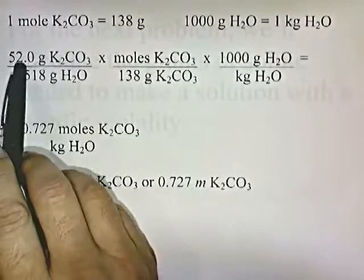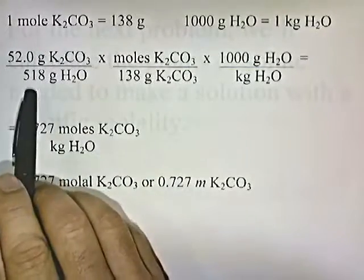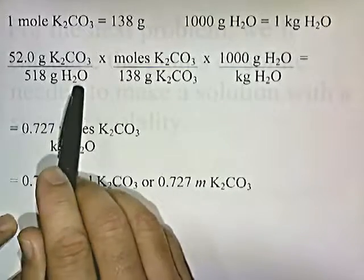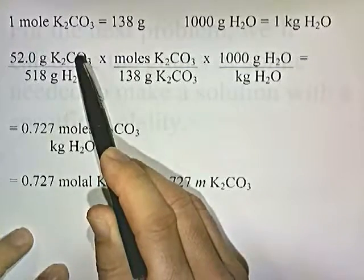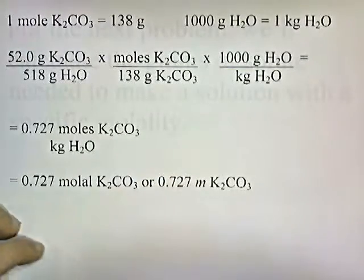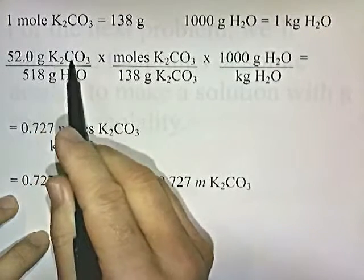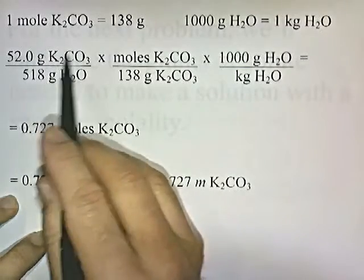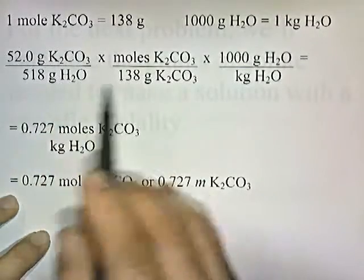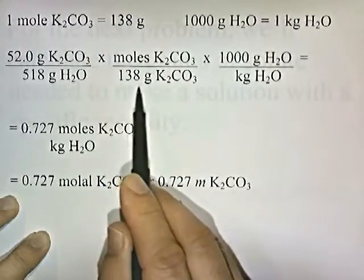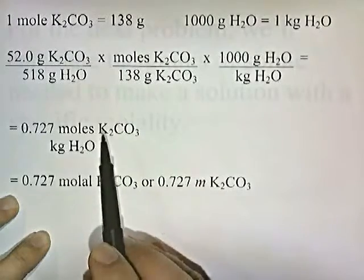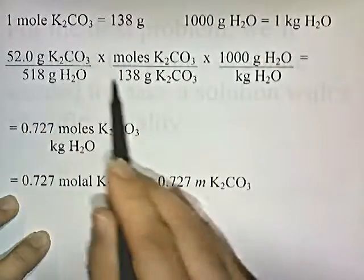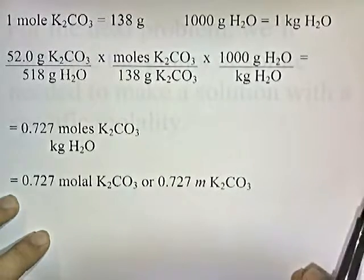They told us that we have 52 grams of potassium carbonate dissolved in 518 grams of water. For molality, we need moles of K2CO3 per kilogram of water. We have grams of K2CO3 on top — I want to get rid of it, so I need grams of K2CO3 on the bottom. I'm going to put 138 grams of K2CO3 on the bottom, equivalent to 1 mole of K2CO3. That converts grams of K2CO3 into moles of K2CO3.